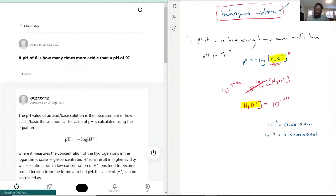Then we divide this 6 by the 9 to find out how much 6 is stronger than 9. So we have 1 times 10 to the negative 6 divided by 1 times 10 to the negative 9, and you should get an answer of 1,000.